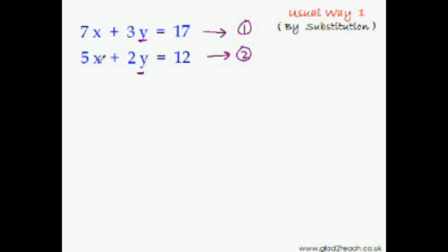So 5x plus 2y equals 12. So this means 2y equals 12 minus 5x, isn't it? When this positive 5x goes to the other side, it will become negative 5x.